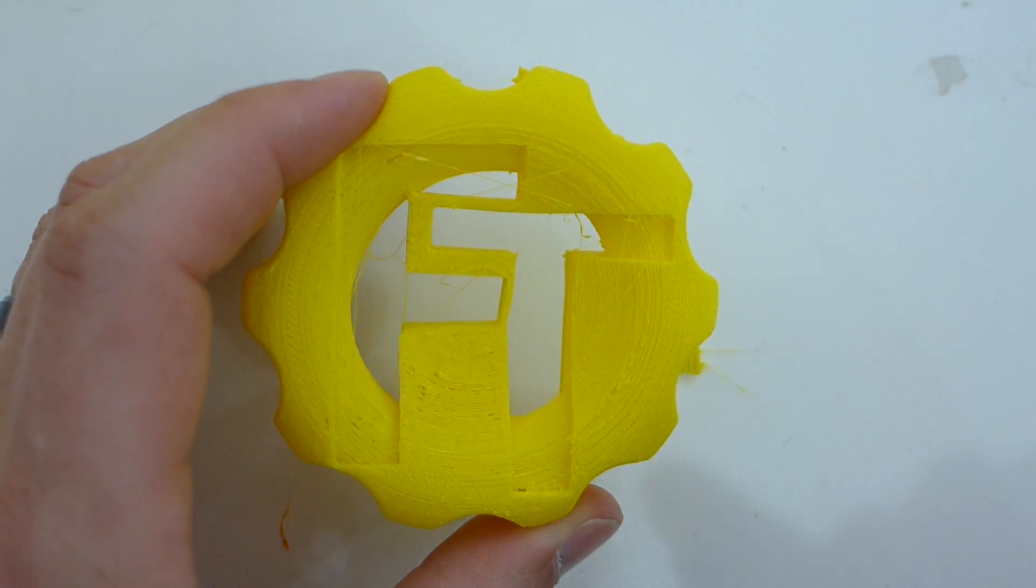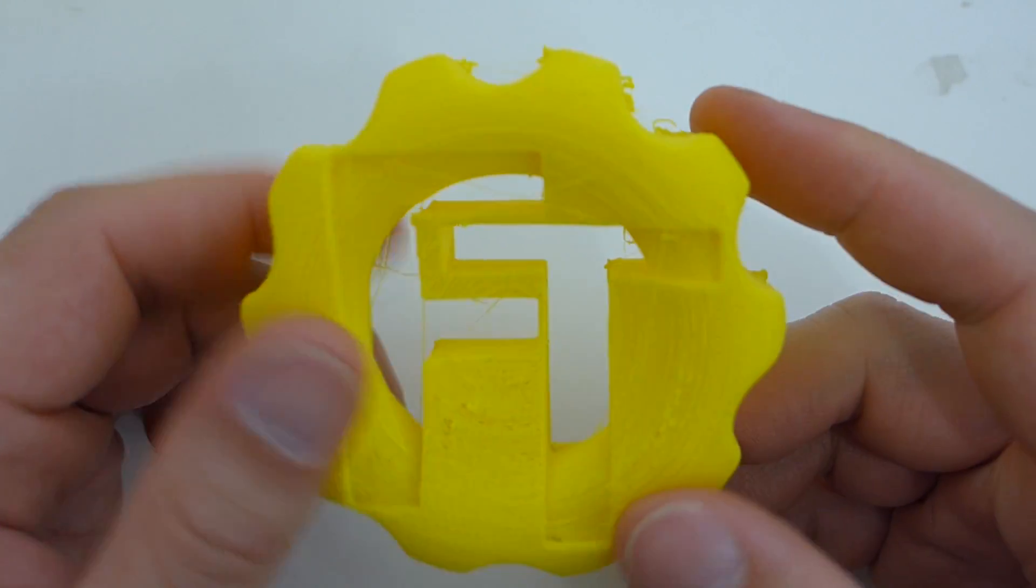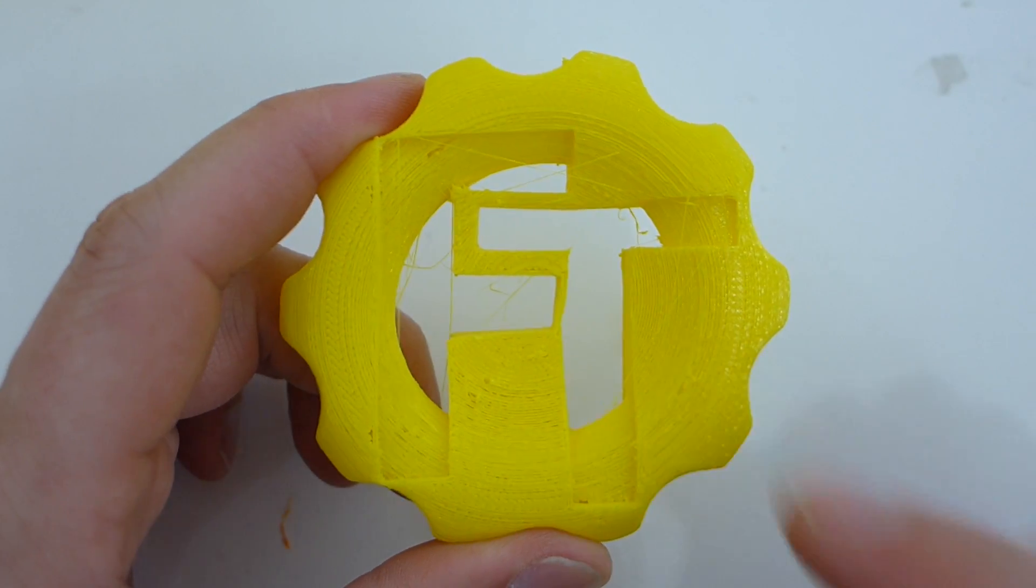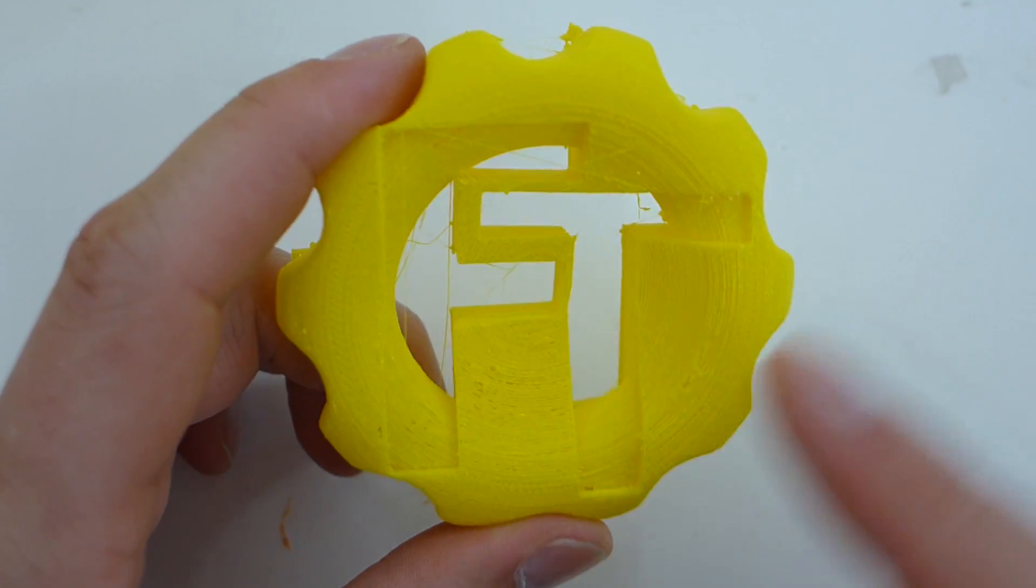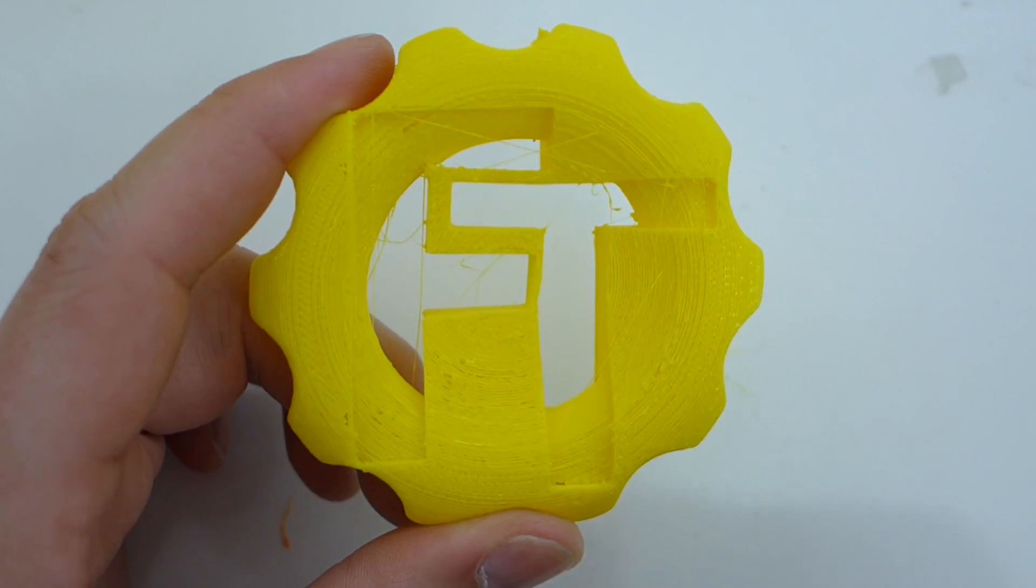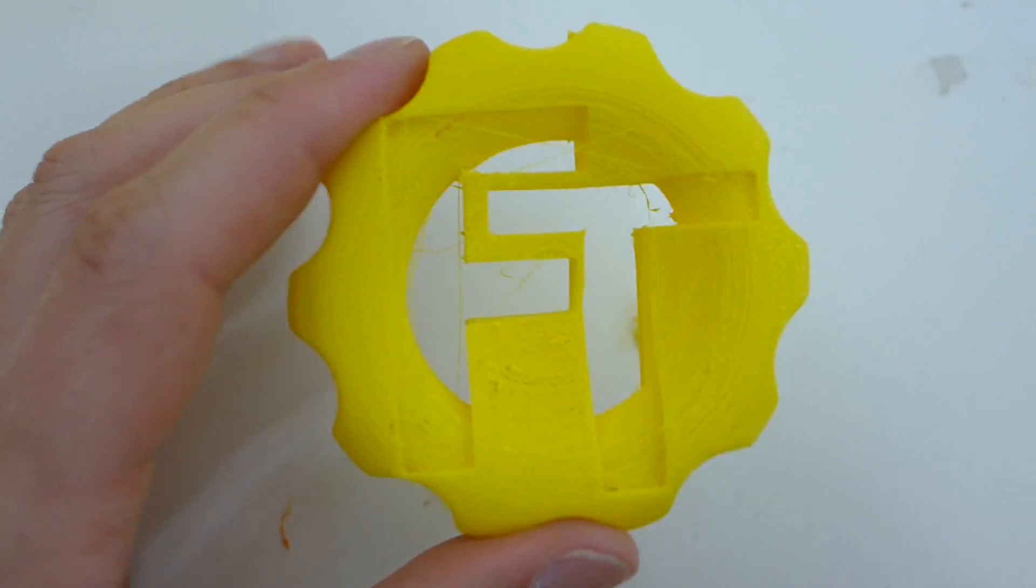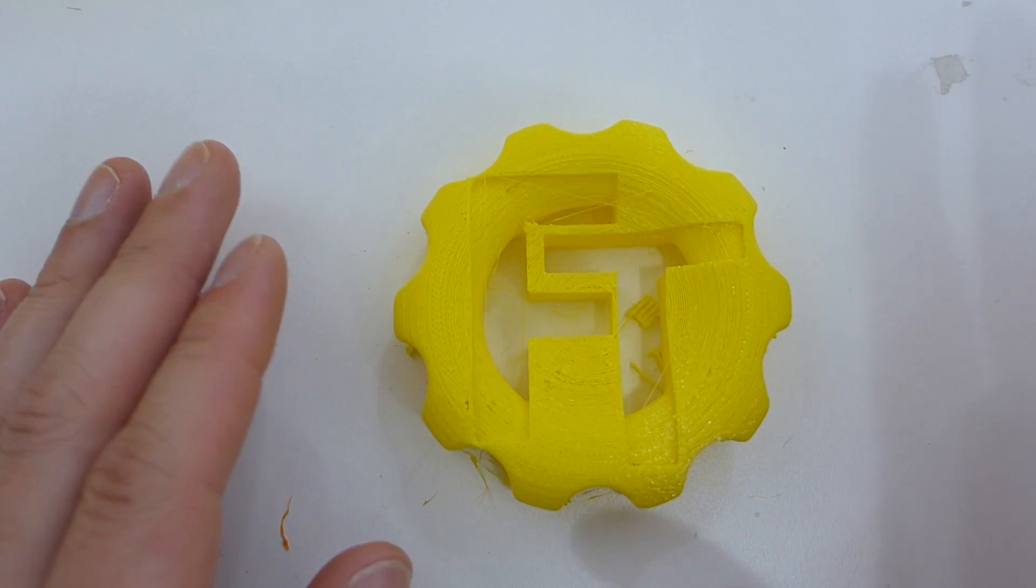What I learned from this print was I need to up my extrusion multiplier more than I have for other flexible filaments. I need to add more walls. I was trying to do two to see if that would work out, and that did not. I was trying to do only three top layers. That did not work out. I need to do four. Then I need to tune my retraction just a little bit more. There's a little bit of stringiness in there, a little bit rough from retractions.